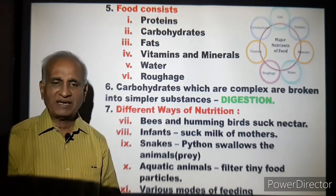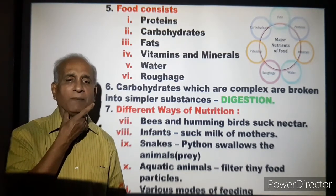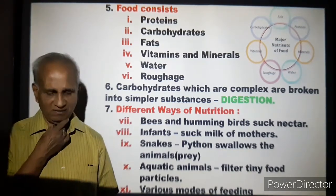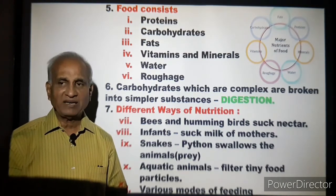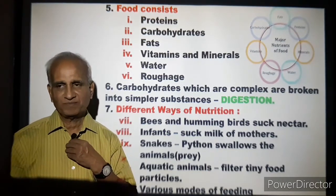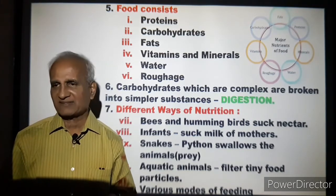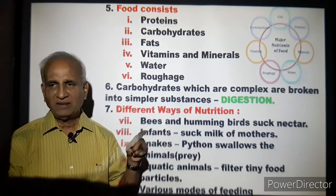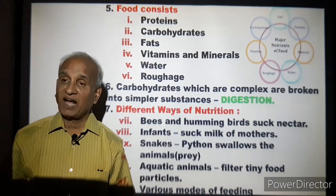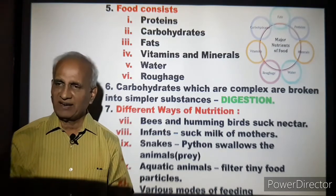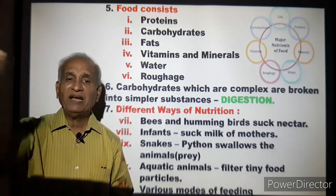Digestion happens in our alimentary canal or digestive tract. The digestive tract starts with the mouth and ends at the anus. Digestion takes place throughout this path. In the large intestine, water is absorbed from the food and the waste is converted into semi-solid matter to be expelled out of the body.